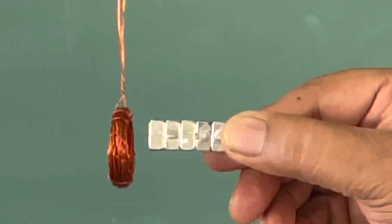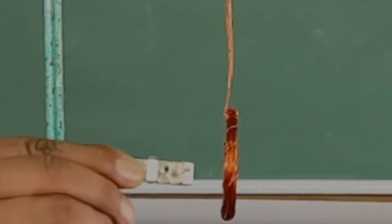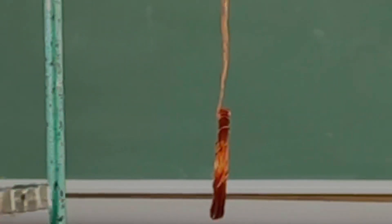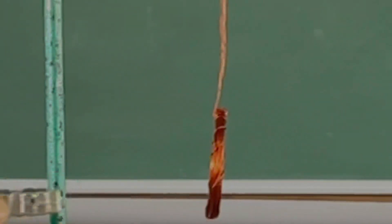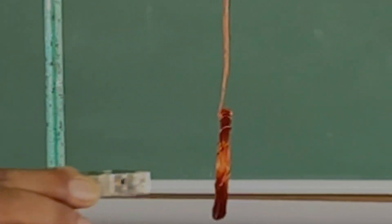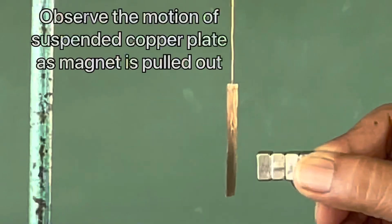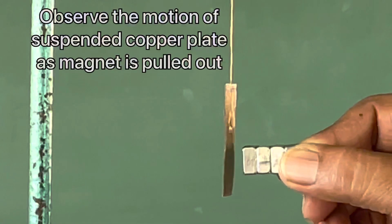The suspended coil moves towards the magnet as it is taken away, because an opposite pole is created on the face of the coil. As the magnet is moved to and fro, opposite poles are created on the face of the coil, resulting in oscillation of the coil.